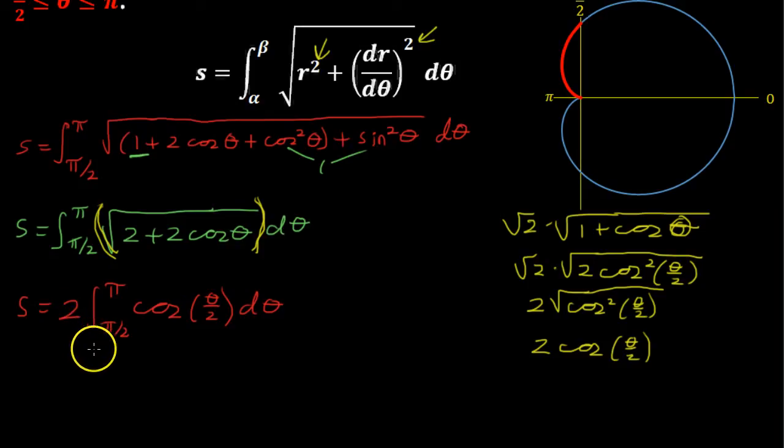So now we can take that integral. So S equals 2 times 2 times the sine of θ/2. And that will be evaluated from π/2 to π.